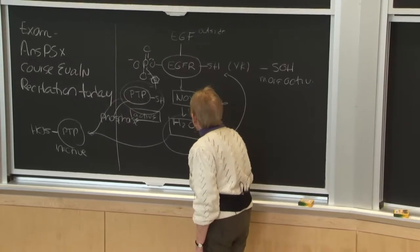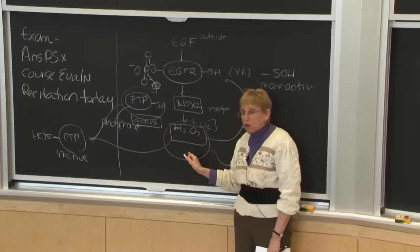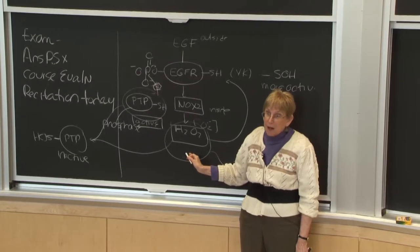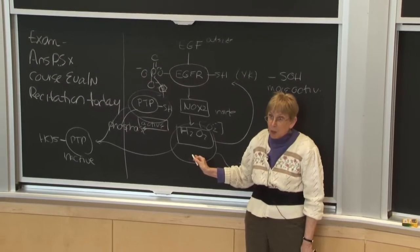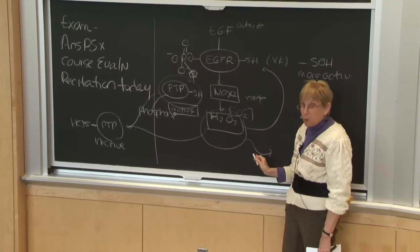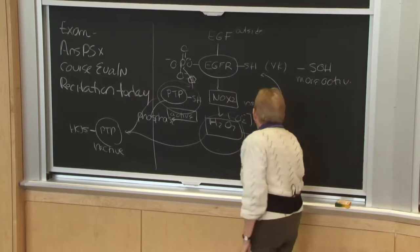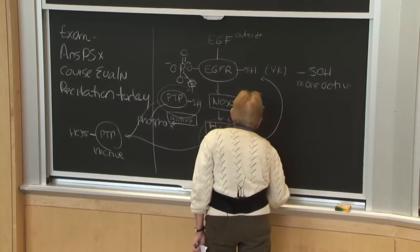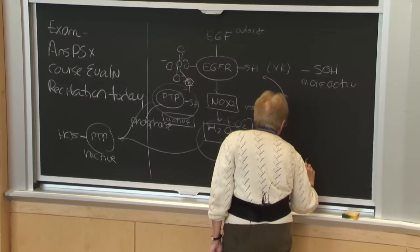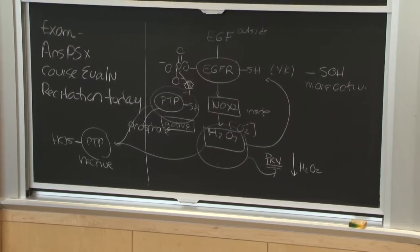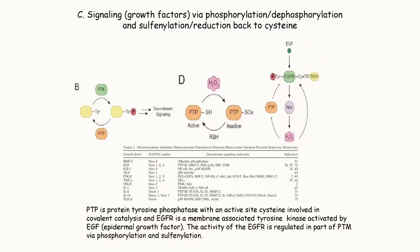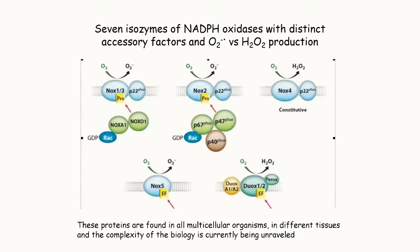Both the tyrosine kinase and the phosphatase are regulated by sulfenylation. Additionally, if you have hydrogen peroxide in the cell, peroxiredoxins can degrade it, removing the hydrogen peroxide and preventing these modifications from happening. So peroxiredoxin activity lowers the hydrogen peroxide concentration — that's another mechanism of control. Many proteins have some variation on this theme, and this is a really active area of research.